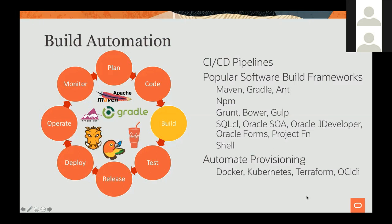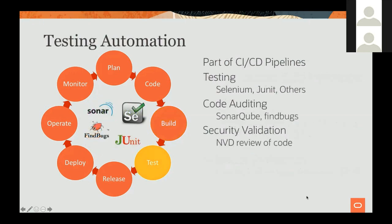With all those capabilities, you can take your code, pick up the libraries it depends on, and package a deliverable out of your application. Another thing we can automate as part of the build is provisioning of environments using industry standards like Docker, Kubernetes, Terraform, and the OCI command line interface.